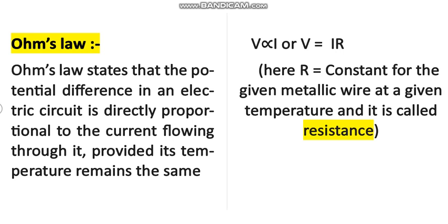Current is defined as the rate of flow of charge. The SI unit of current is Ampere. Voltage is defined as the amount of work needed to move a charge from one point to another, and its SI unit is Volt. Resistance is the opposition to the movement of charge, similar to friction, and its SI unit is Ohm.